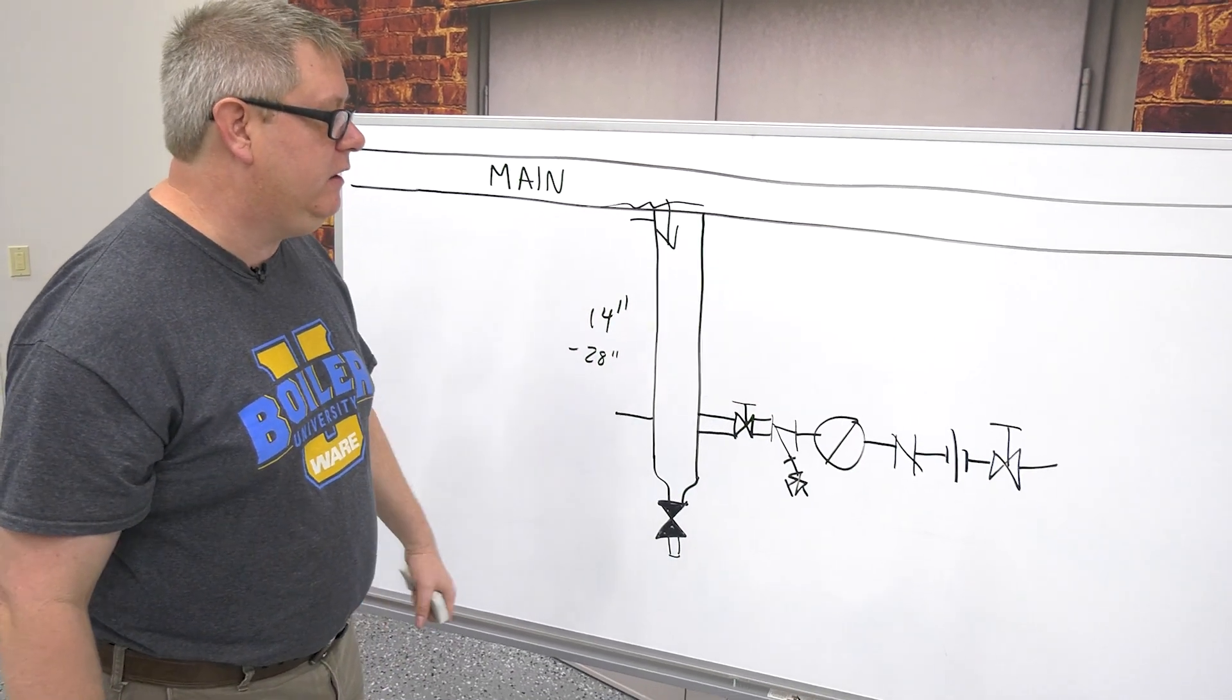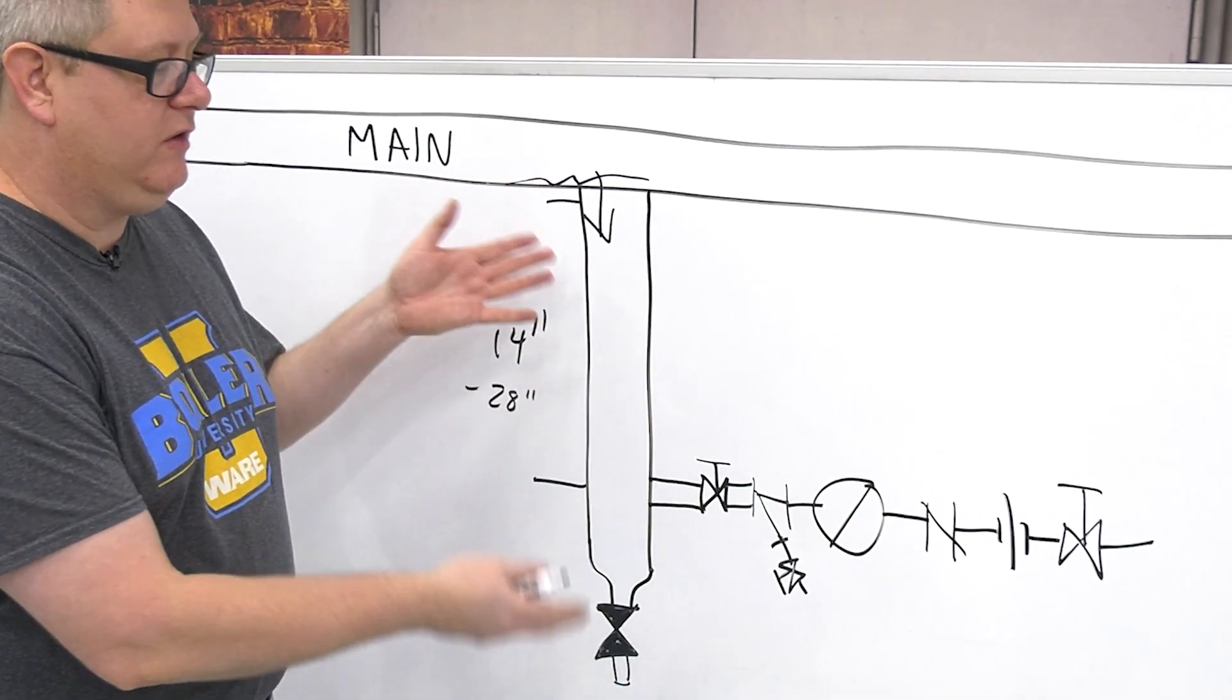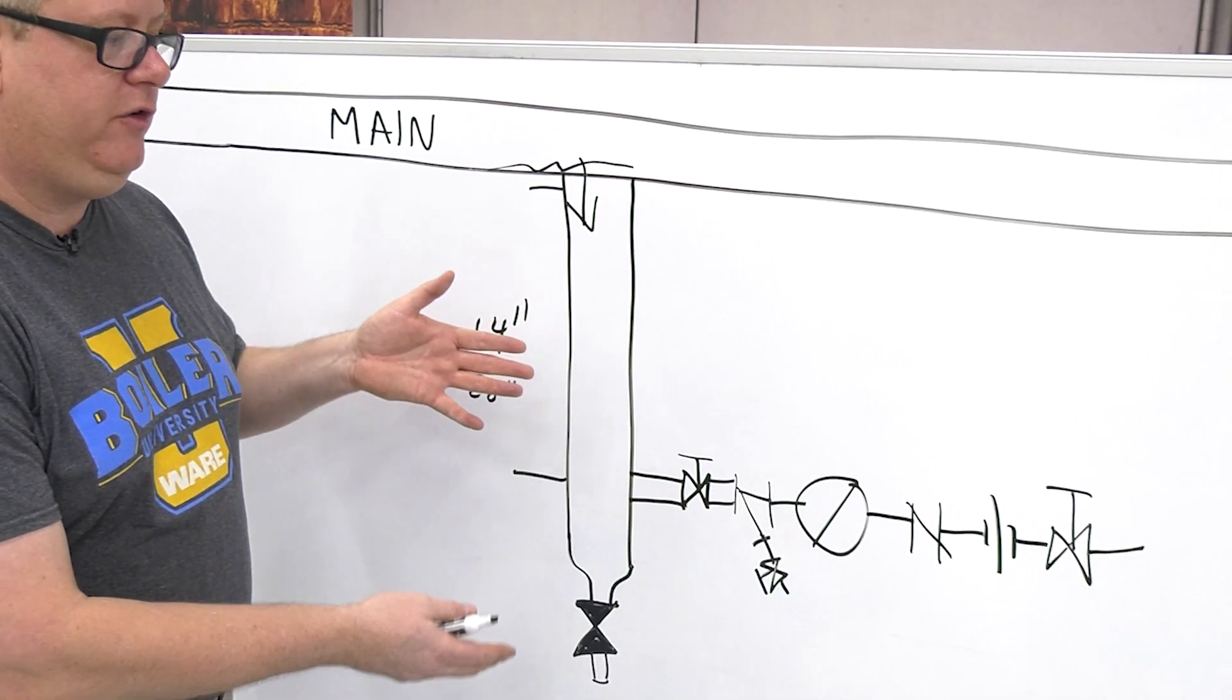We can verify that it is if needed. This is a good example of the minimum near trap piping. There's always accessories, things that we can add to this, but this is a good example of what to look for on your checklist.